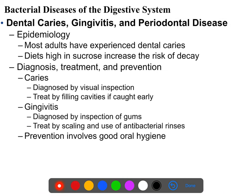Most adults have experienced dental caries, and many of us have experienced multiple dental caries. In the industrialized world, it is the most common bacterial infection - because it is an infection, even though we don't think of it like that. It is found very commonly in the industrialized world where refined sugars and starches are common. Diets high in sucrose and starch increase the risk.